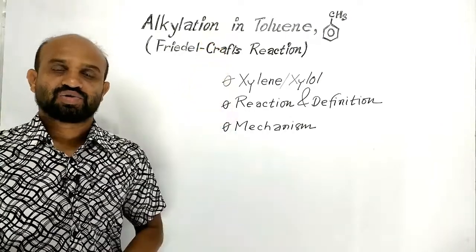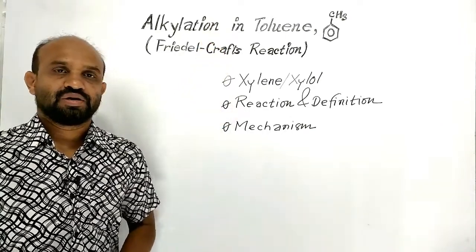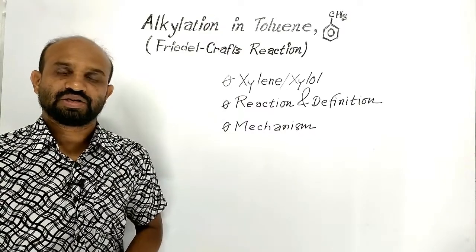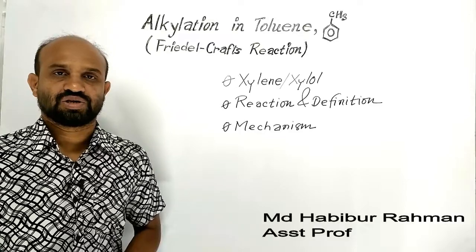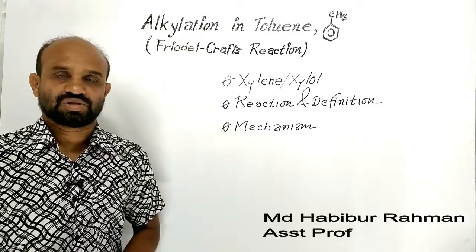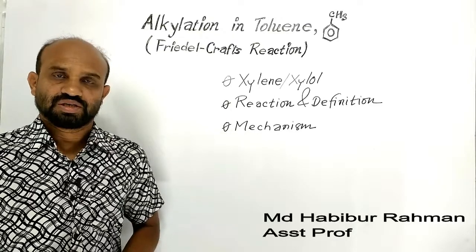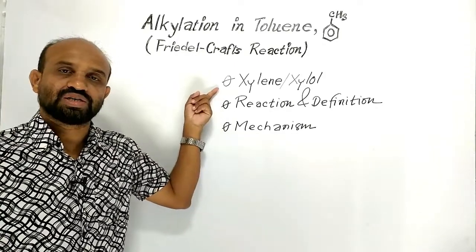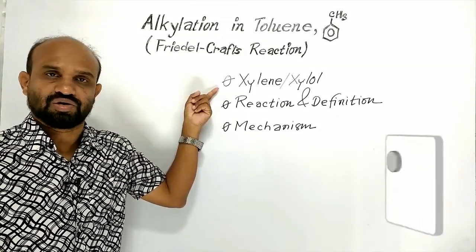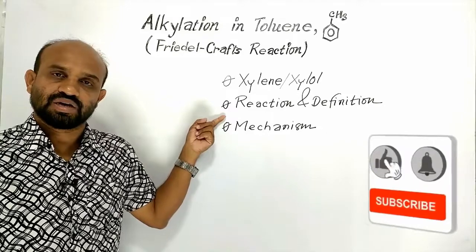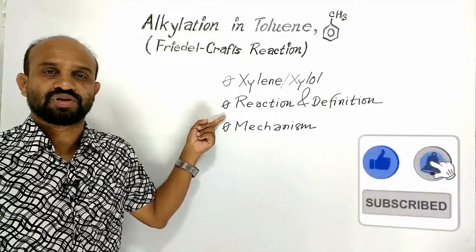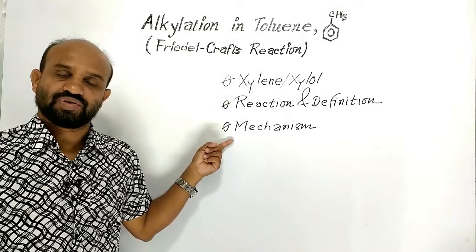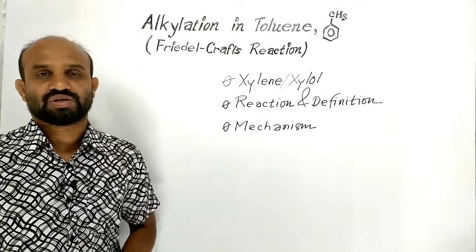Alkylation in toluene: a reaction between toluene and alkyl halide in presence of anhydrous aluminium chloride. In this lesson we are going to learn what is xylene or xylol, the alkylation reaction and definition of alkylation, and finally the mechanism of the reaction.